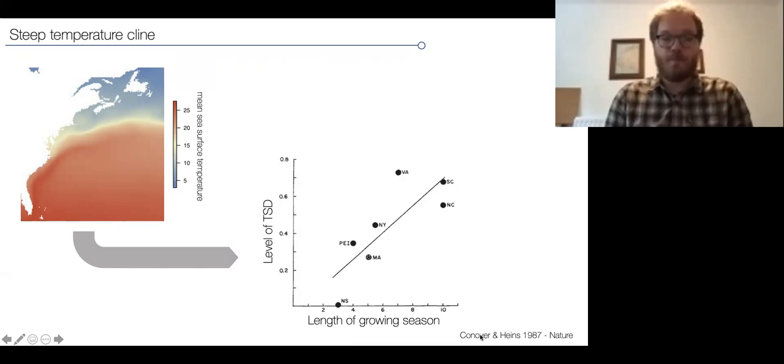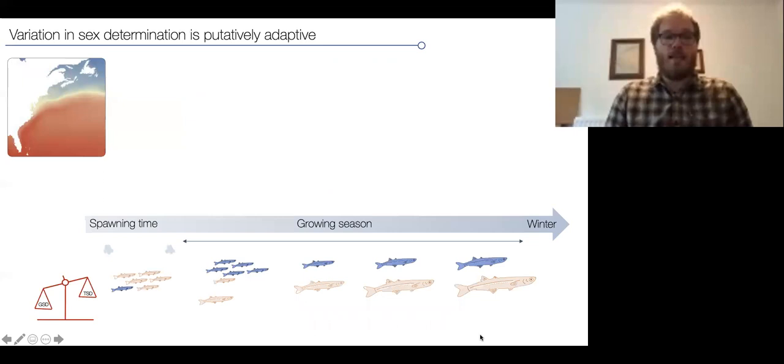If you live in an environment with stable temperature environments and long growing seasons, the populations are more likely to be temperature-sensitive in their sex determination, whereas northern populations in less stable climates with short growing seasons, about only three months, they are mostly genetically determined.